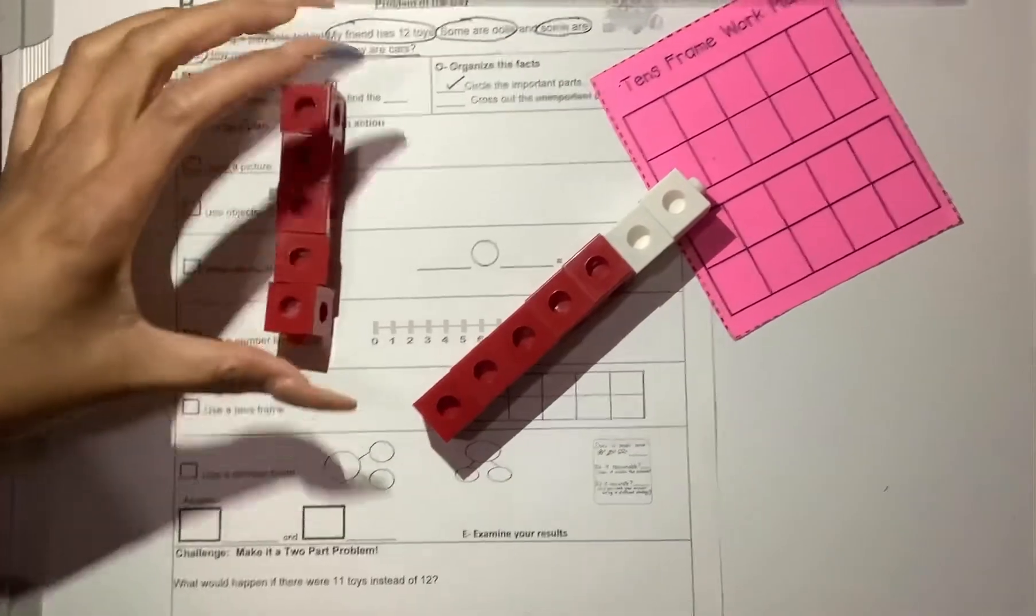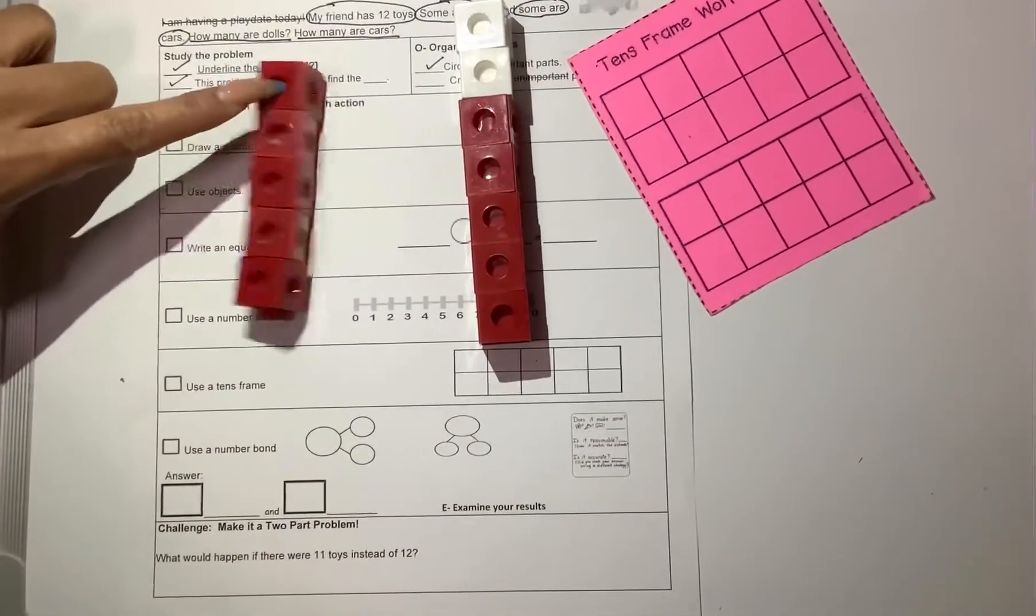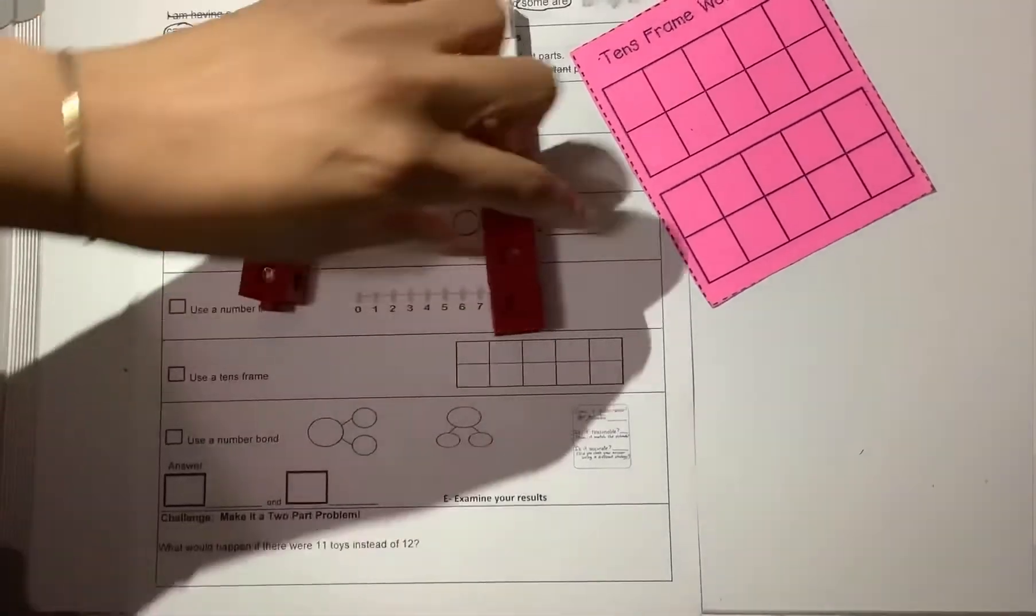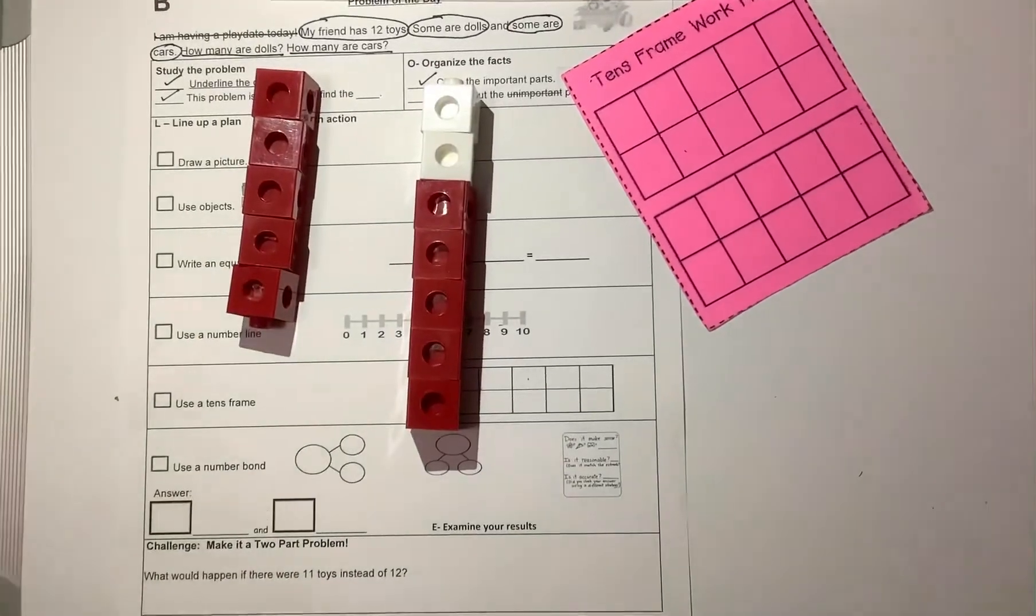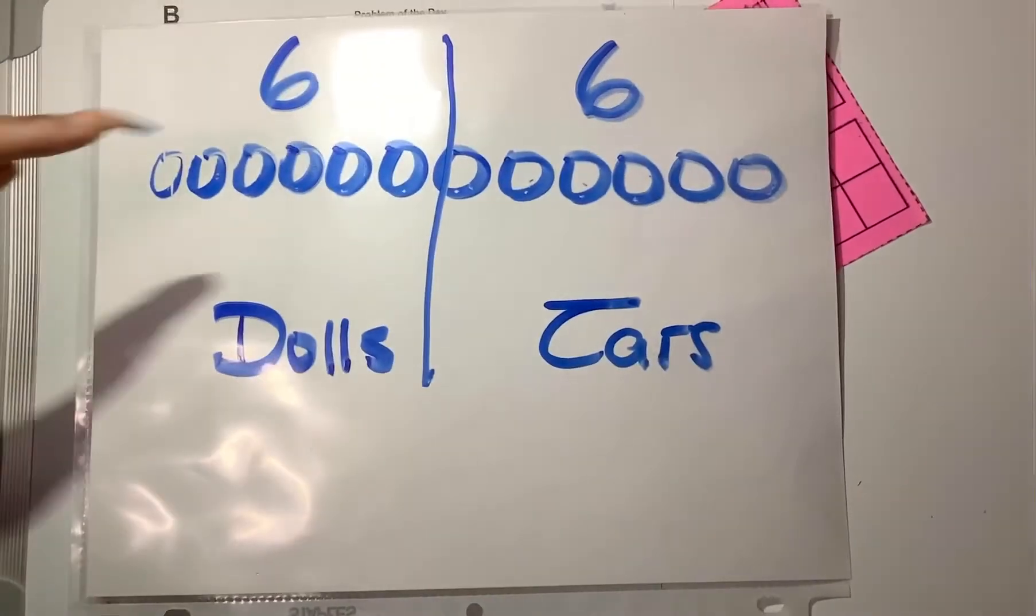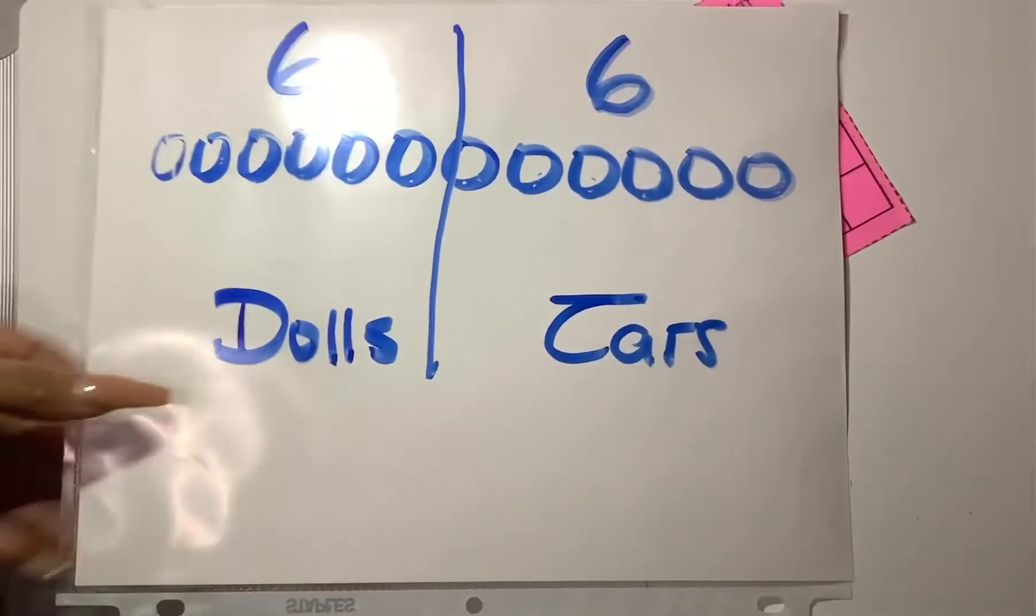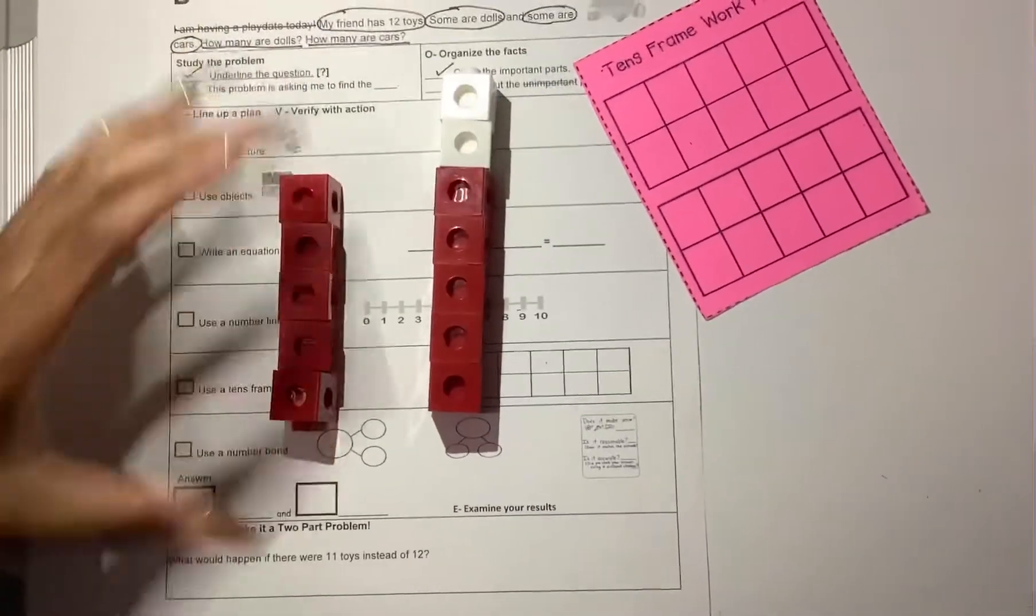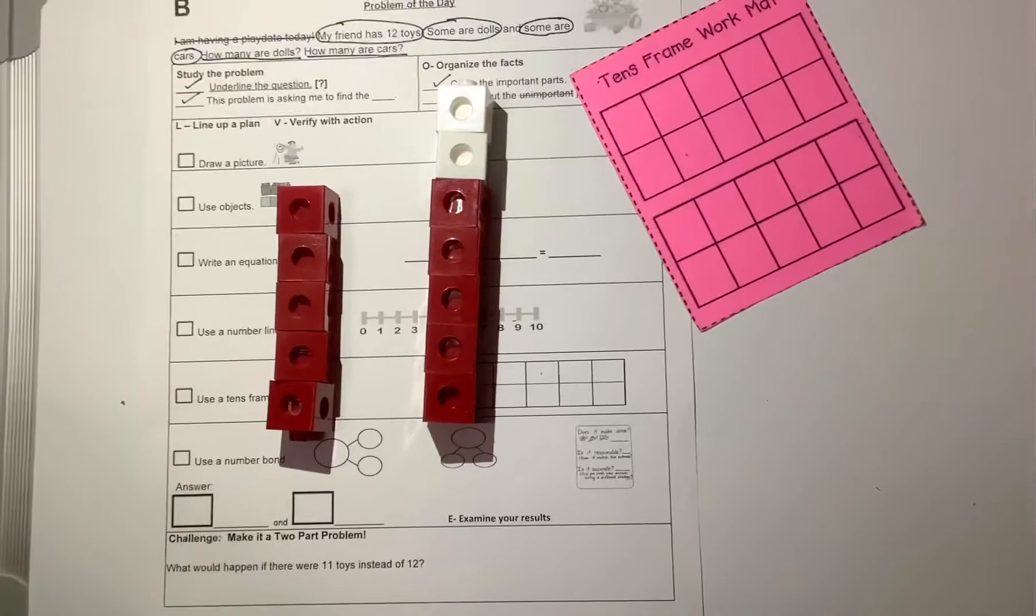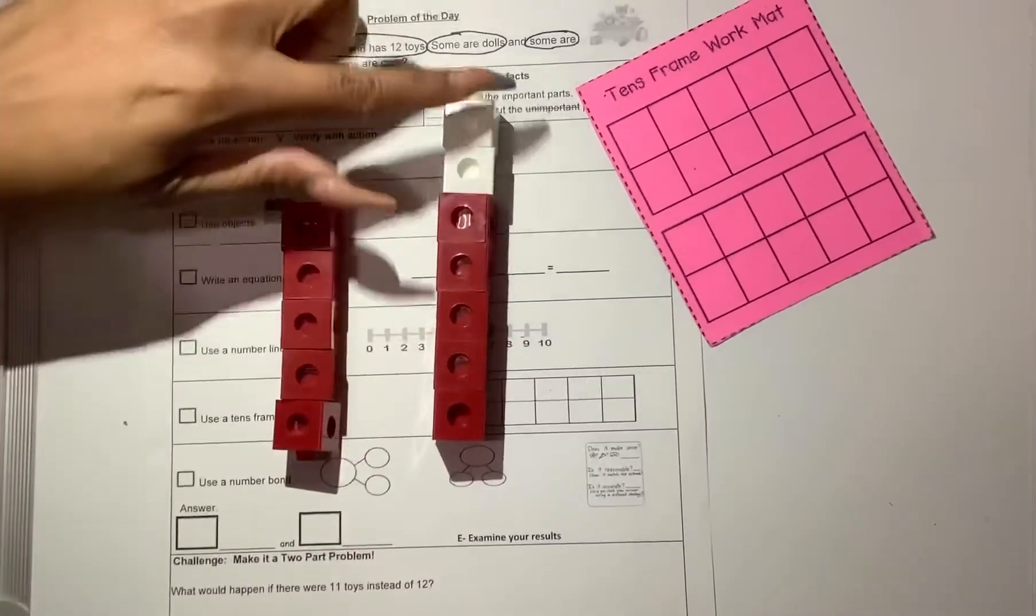Let's see. How many is on this side? I have 1, 2, 3, 4, 5. And I have 1, 2, 3, 4, 5, 6, 7. So in my first drawing, I have 6 and 6 make 12. 6 dolls, 6 cars. And now I see that I can show 12 another way. I can have 5 dolls and 7 cars.